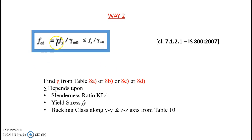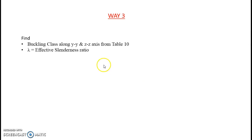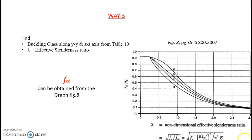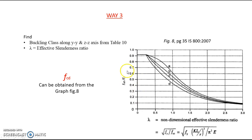Way 3: find the buckling class and effective slenderness ratio in the same way, then read F_CD directly from Graph 8. In Graph 8, the y-axis is F_CD / F_Y and the x-axis is the effective slenderness ratio lambda. For example, if lambda = 1.5 and buckling class is c, the graph gives F_CD / F_Y = 0.3. Knowing F_Y, you can immediately calculate F_CD.